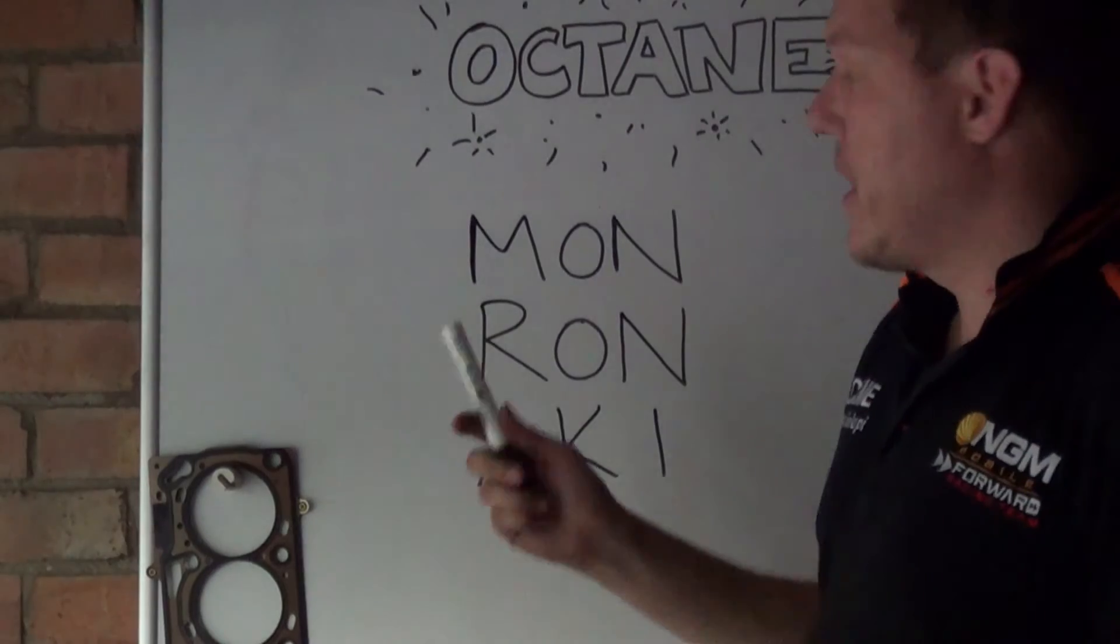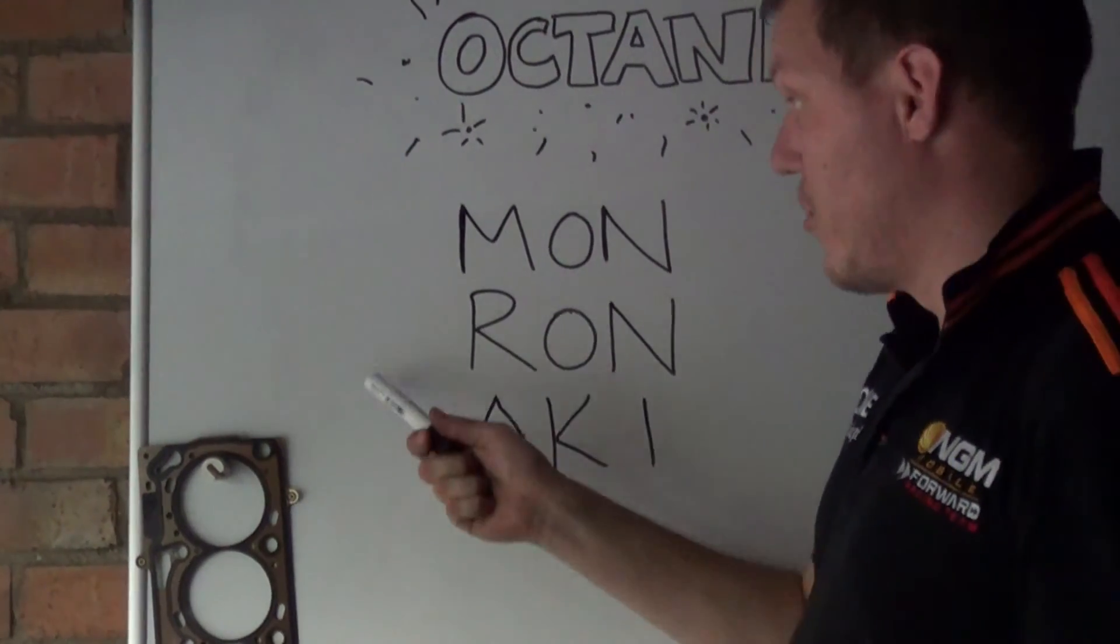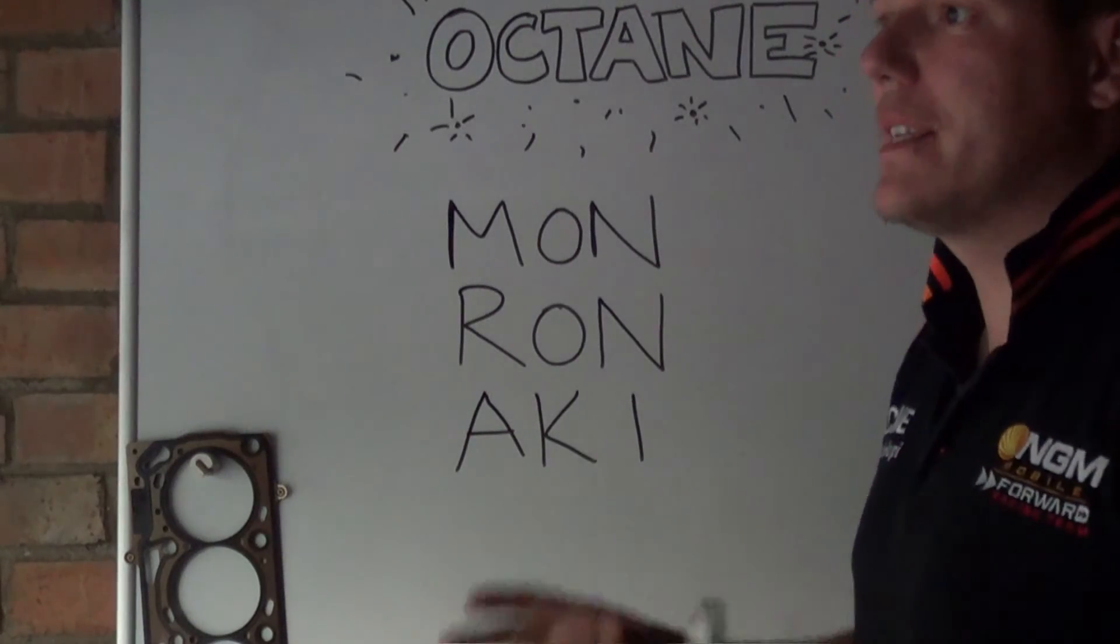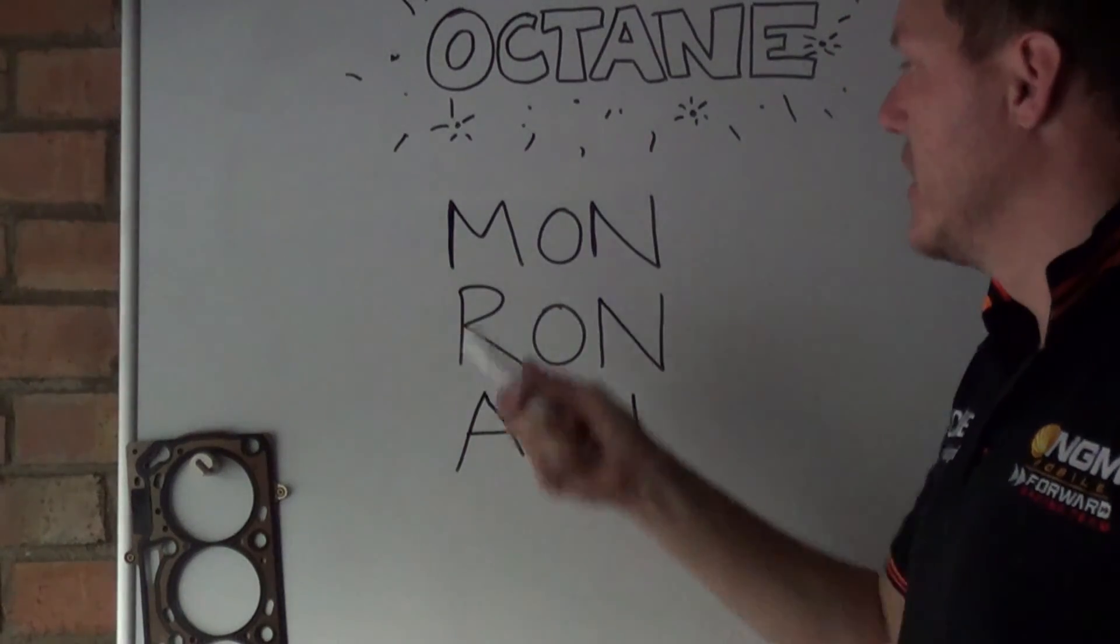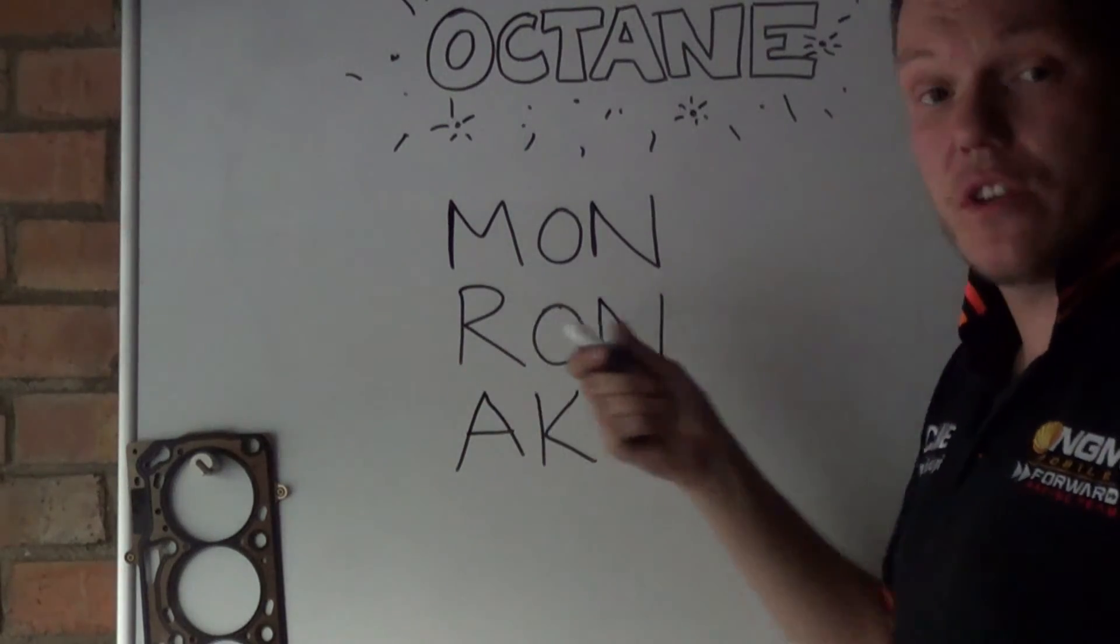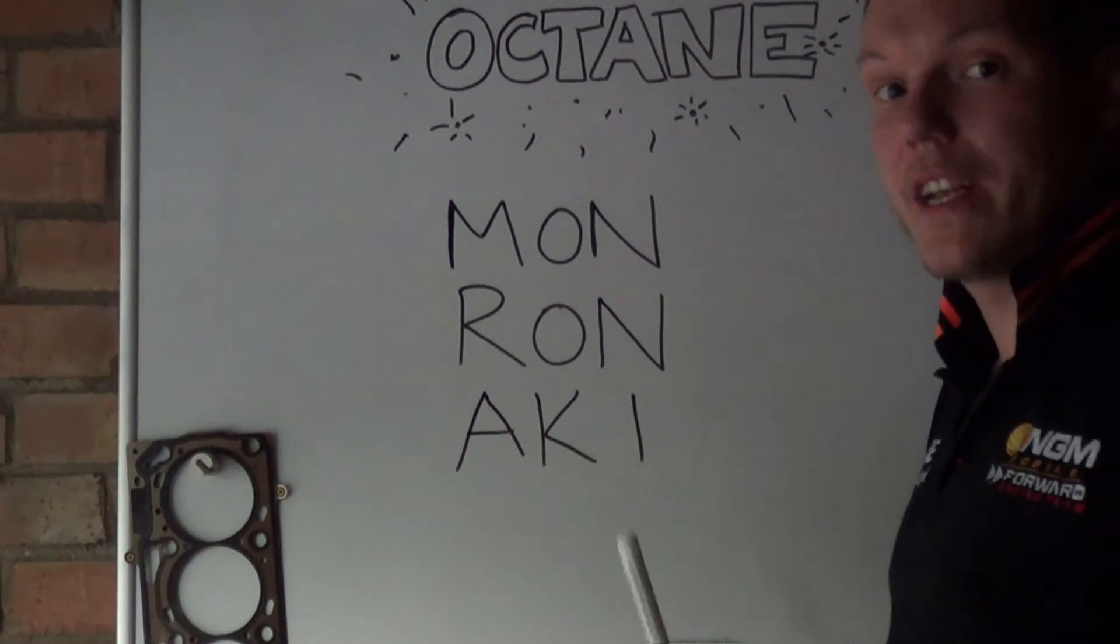So you might see at your petrol pump there is a MON or a RON or an AKI number. This is basically three different standards. So there is Motor Octane Number, there is Research Octane Number, and there is Anti-Knocking Index.